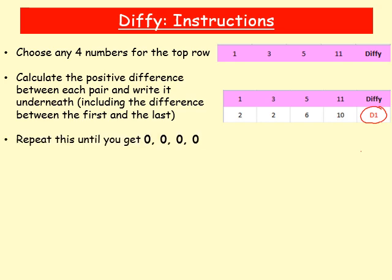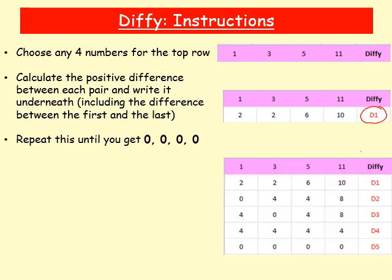The next thing you're going to do is repeat this process until you get all zeros in your row. So we take 2 from 2, 6 from 2, 10 from 6, and the last minus the first — 10 minus 2. Then we repeat again: 4 minus 0 is 4, 0 minus 4 is 4, and so on. Remember, we're always taking the positive difference. So if you end up with a negative number, just make that number positive when you write it in your table.